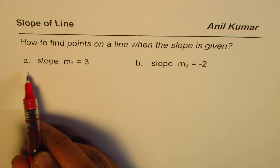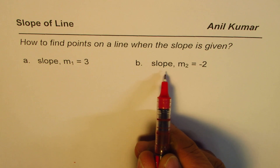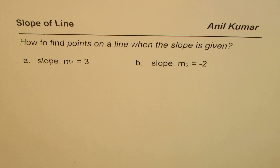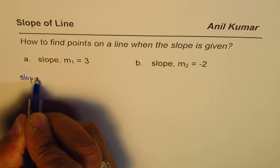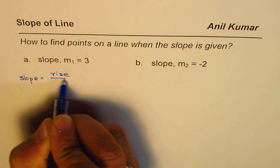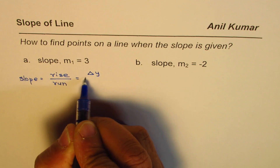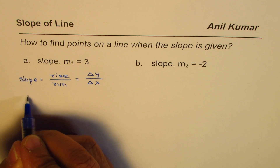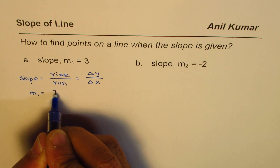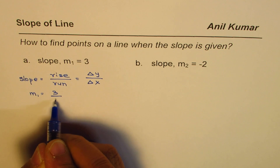We have two examples here. For the first one, slope is given as m1 equals 3, and for the second example, slope is minus 2. When slope equals 3, slope is basically rise over run — change in y value divided by change in x value. So a slope of 3 means change in y is 3 and change in x is 1.